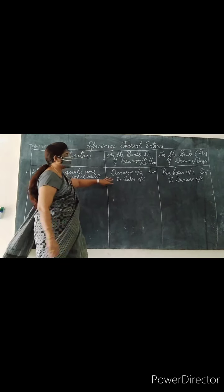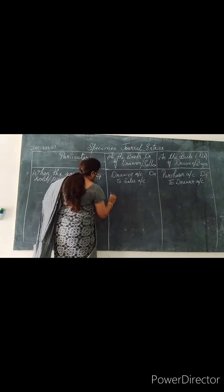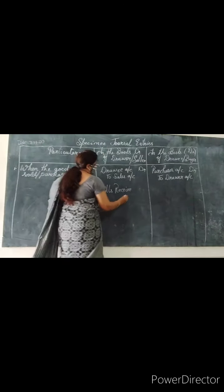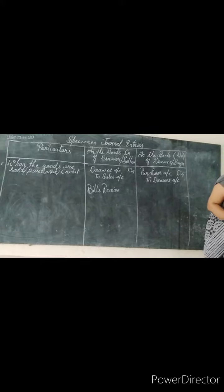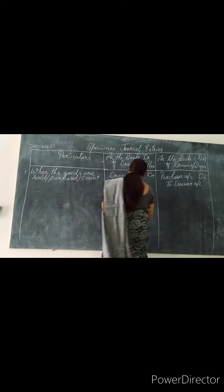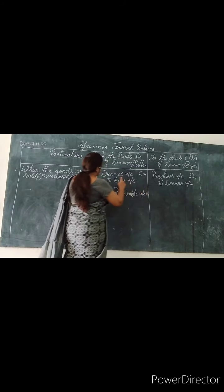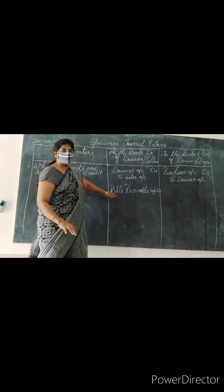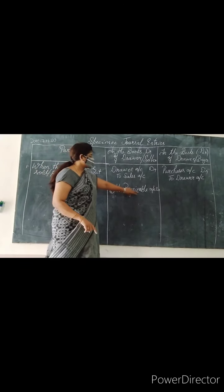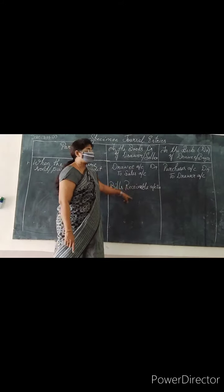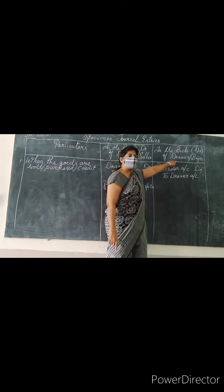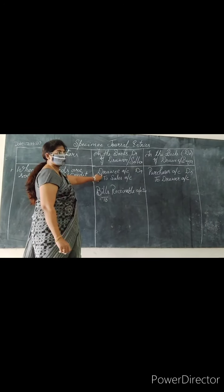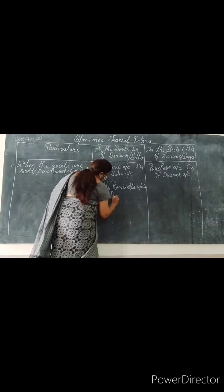We are supposed to receive the cash, but we did not receive it. Instead of cash, we are making a bill. Who is supposed to receive? Bills receivable. Instead of cash, what did we make? We made a bill — that is bills receivable. Who needs to receive it? The drawer receives it. Who will pay the bill? The drawee pays the bill — that will be bills payable. Bills receivable: who has to pay us this cash? The drawee. So you will write it as drawee account.